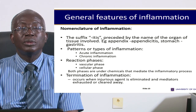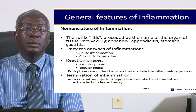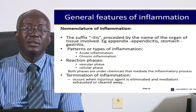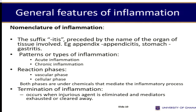Now let's look at the nomenclature. The suffix -itis, preceded by the name of the organ, is how you give a name to an inflammatory area. For instance, the appendix when inflamed will be appendicitis. The stomach lining when it is inflamed is gastritis — it is not 'stomachitis' because it is the Greek word for the stomach that is used, not the English one.